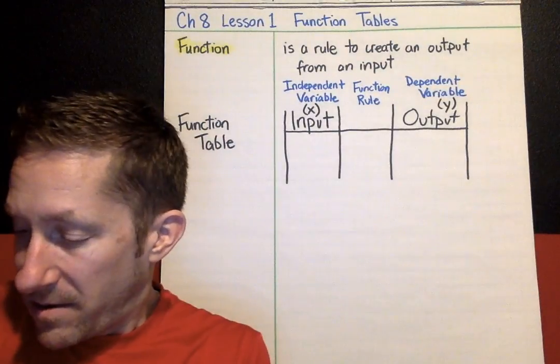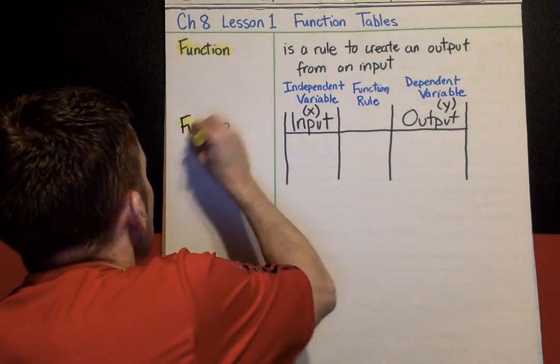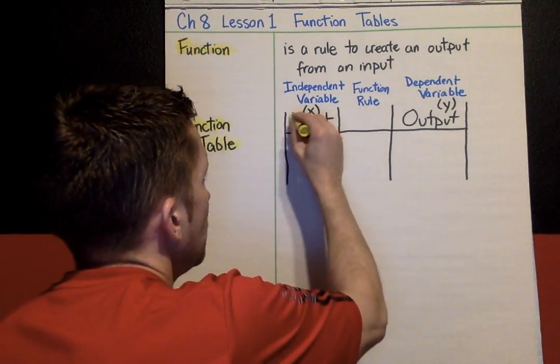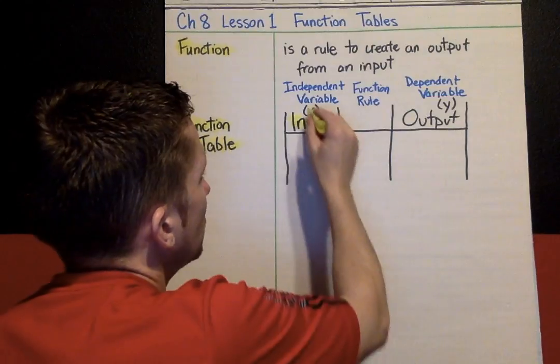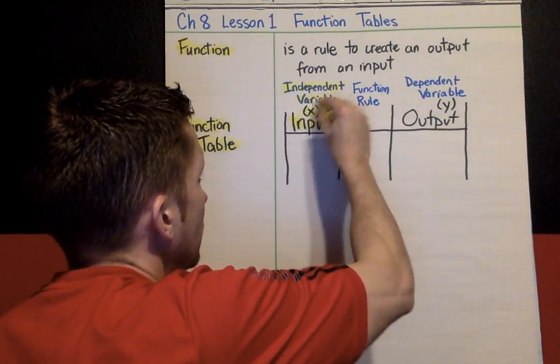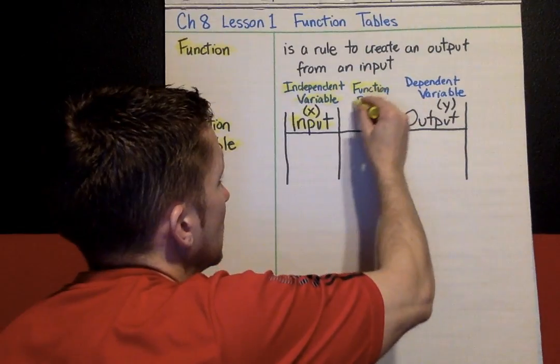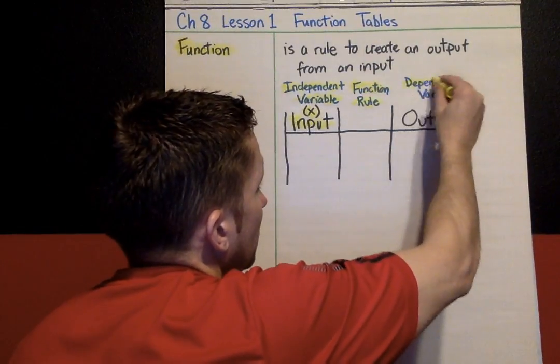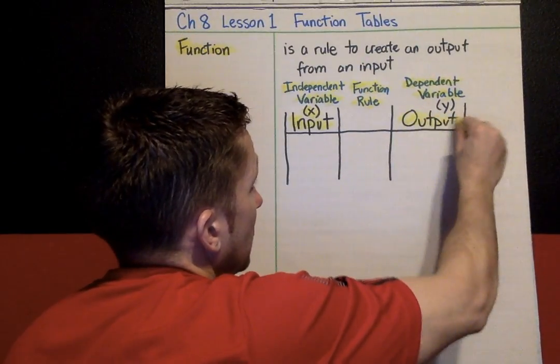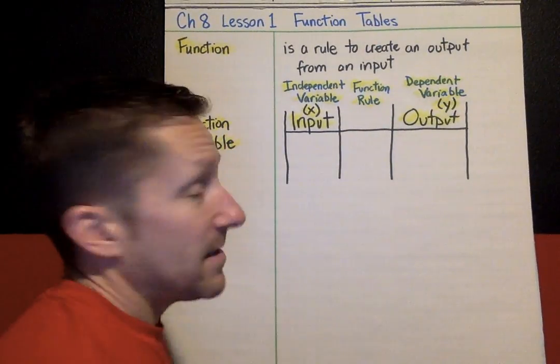Again, tons of vocabulary today. Let's get these babies highlighted. This whole thing that we're looking at is a function table. The input, also known as the x value, also known as the independent variable. This thing in the middle here is a function rule. And we'll get more into that in just a second. The output is also known as the y value and the dependent variable.